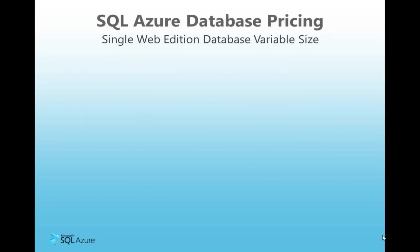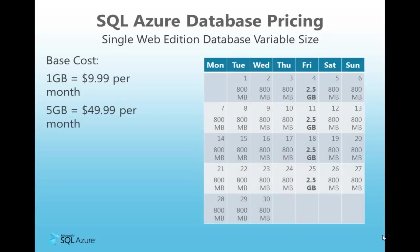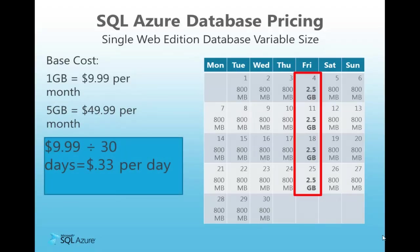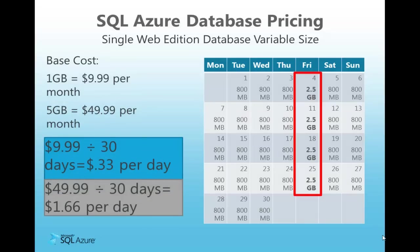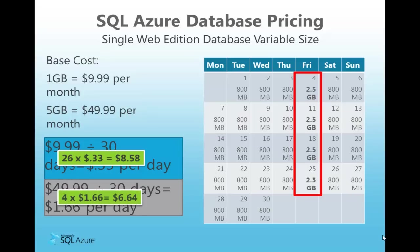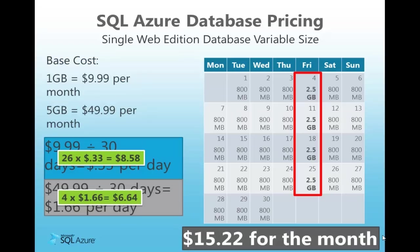In our second example, our same database had a peak size of no more than 800MB for 26 days, and there were 4 days where the peak size reached 2.5GB. There are 26 days at the 1GB Web Edition pricing, and then 4 days at the 5GB Web Edition pricing of $49.99 per month. Because the cost per day for the 1GB level is $0.33, we multiply 26 days by $0.33 and get $8.58. We have 4 days where peak size was at the 5GB level, so we multiply $1.66, the daily cost for this level, by 4 days to get $6.64. Added together, our total monthly cost is $15.22.